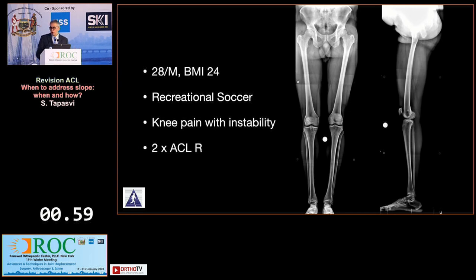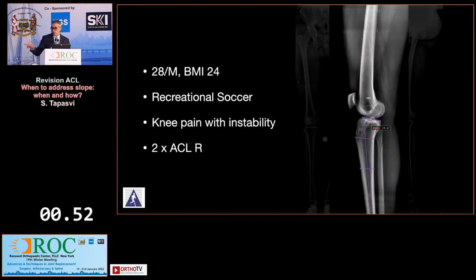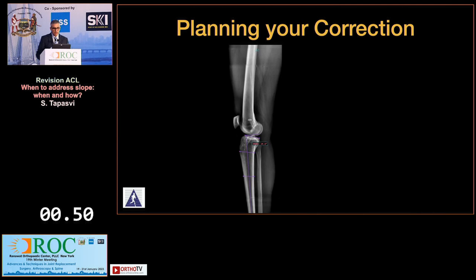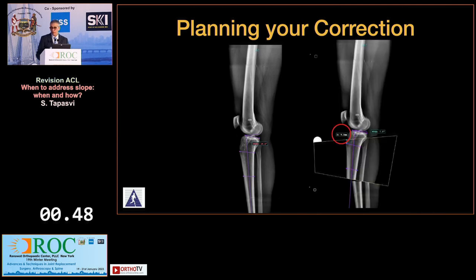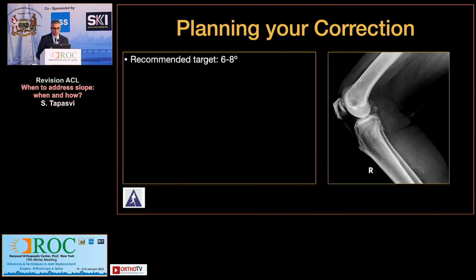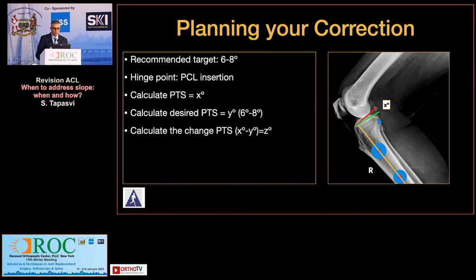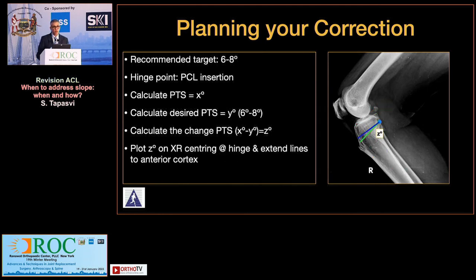Here is an example of a patient with two failed ACLs where the slope was calculated at 15 degrees, and digital planning gave an anterior closing wedge of almost 9 centimeters. You can also plan on simple x-rays using rulers and trigonometry, but digital planning is probably the best approach.